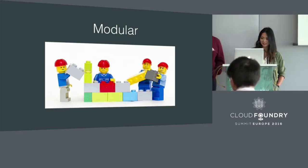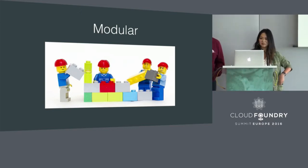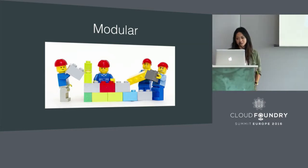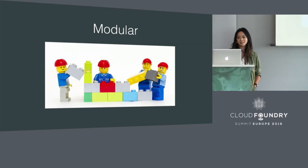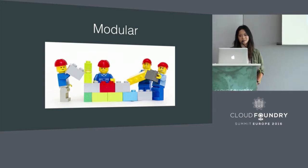Modular. We have a few great ideas about how to improve the app deployment lifecycle, but we're just ten people as a team. We want the API to be modular so that your ideas are possible and so you can customize your app development lifecycle to your needs.